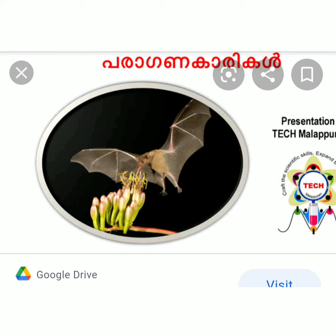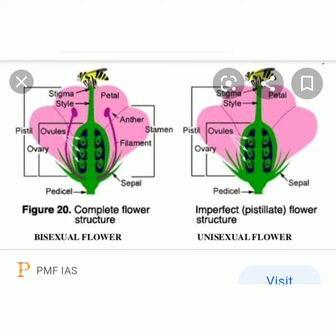We know that the male reproductive part is androecium and the female reproductive part is gynoecium. When both androecium and gynoecium are present in a single flower, it is called a bisexual flower. The example is hibiscus.